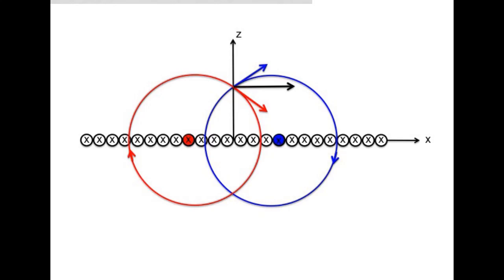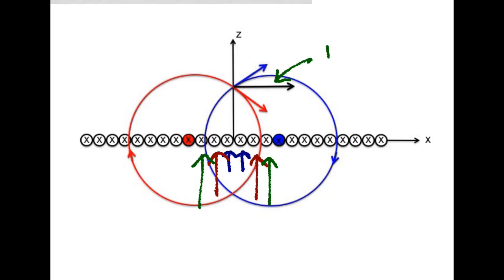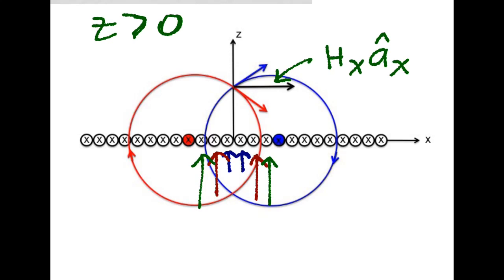We can then use superposition and think about the magnetic field intensities due to this pair, then this pair, then this pair. For each pair, we know the field is only in the a_x direction. When we add them up going from zero to infinity, the result is that we can only have a magnetic field intensity in the x-direction. This will be true at any point in space for z greater than zero because the sheet is infinite in extent.